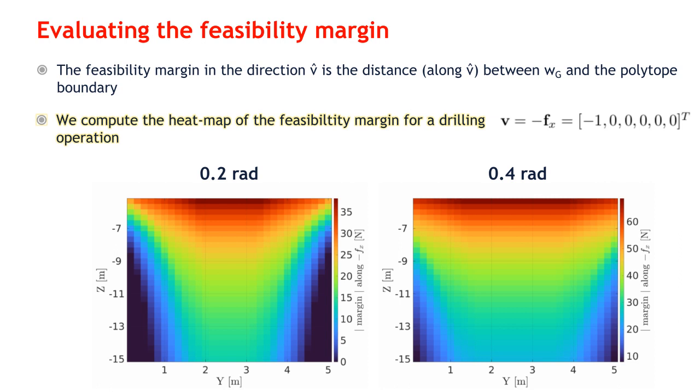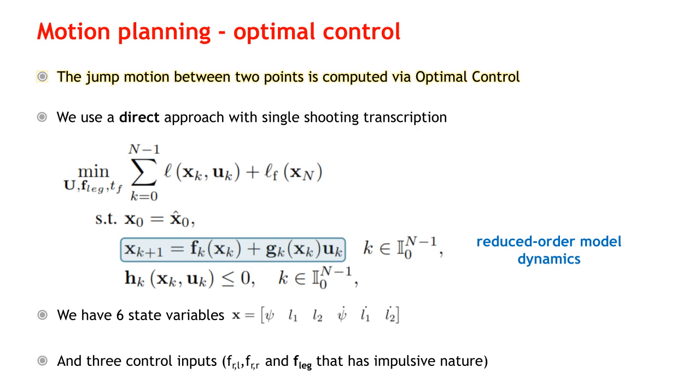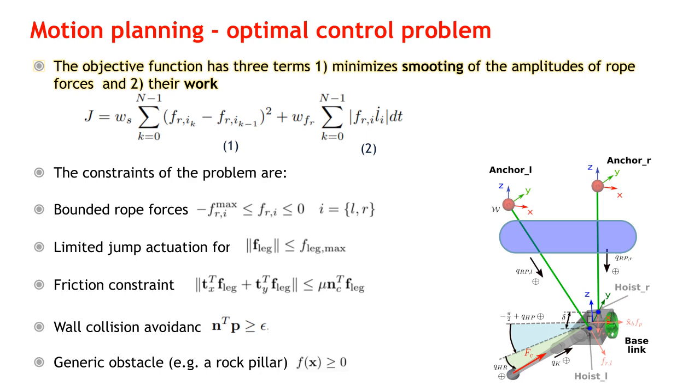To plan the jump trajectory, we transcribe an optimal control problem into an NLP where the decision variables are the trajectories of the rope forces, the leg impulse, and the duration of the horizon. The states are the chosen coordinates and their derivatives and are computed with the reduced order dynamics along the whole horizon. In the cost function we have three terms: one minimizes the variation of the rope forces, another their energy consumption, while the third the kinetic energy at landing.